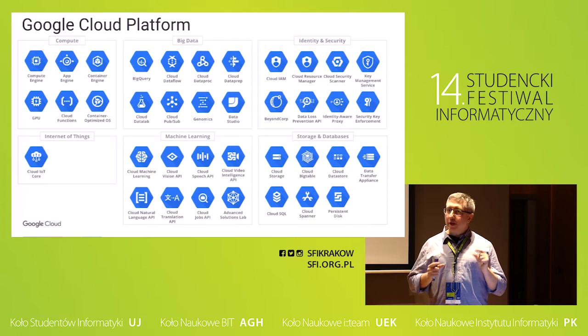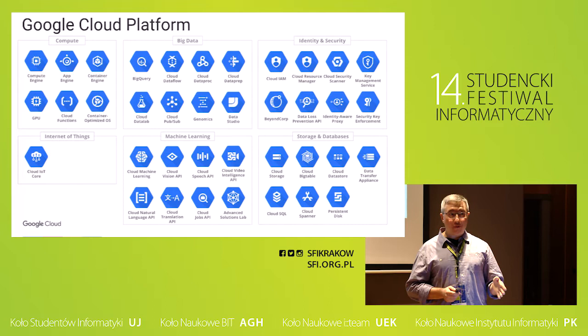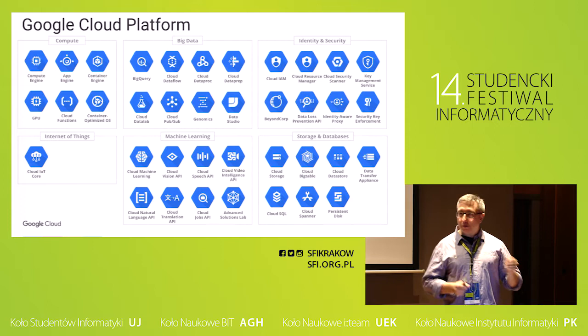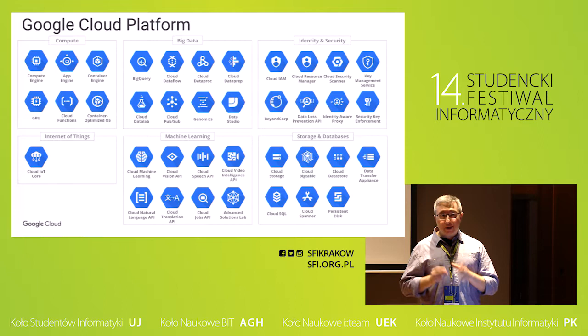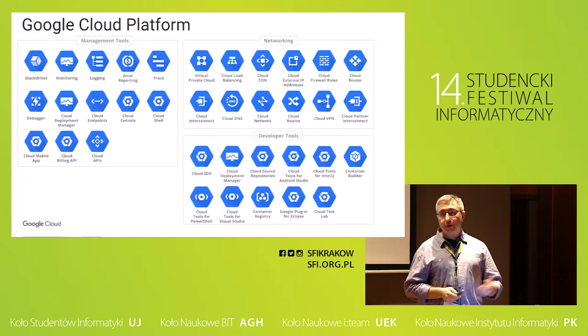The Google machine learning APIs are part of the Google Cloud Platform. Google Cloud is huge — maybe you've not heard about it, but it's roughly 70 different products. And as you can tell, we do love blue hexagons. There are different families: the computing part if you want computers in the cloud, the big data part for analyzing data, security, storage and databases, machine learning which we're looking at today, internet of things, development tools, managing your solutions, and networking.